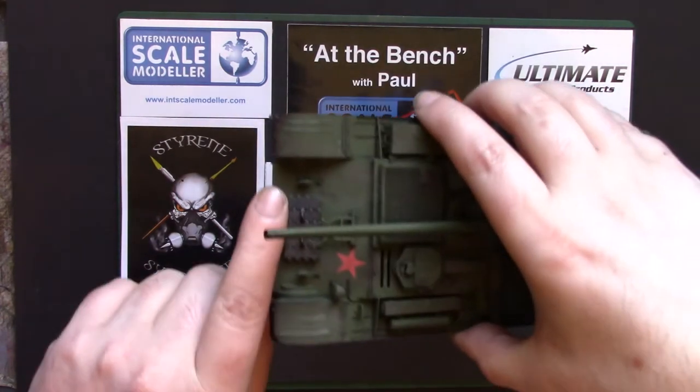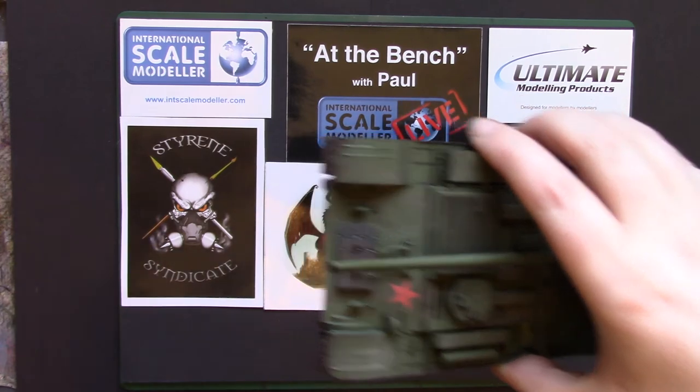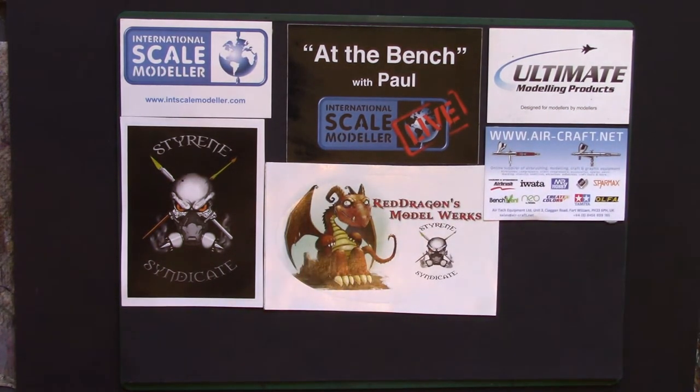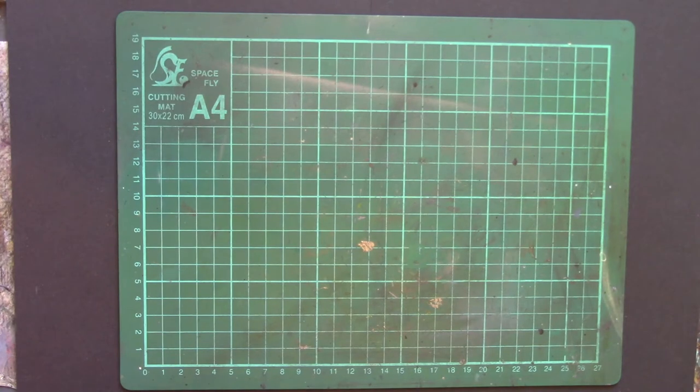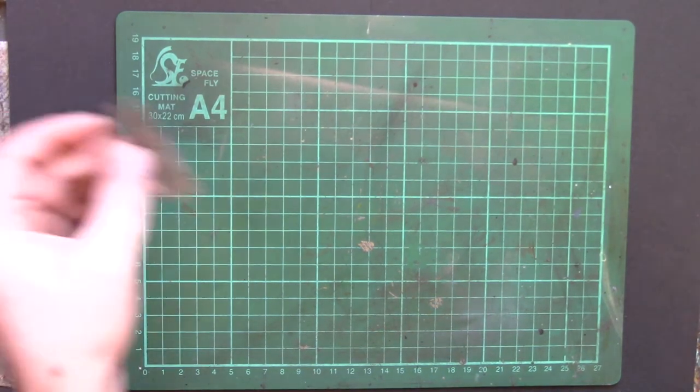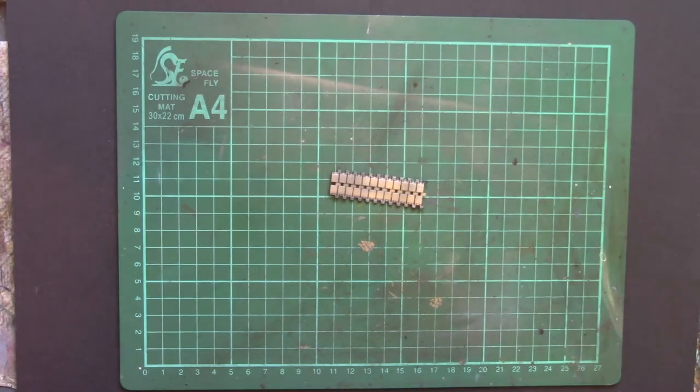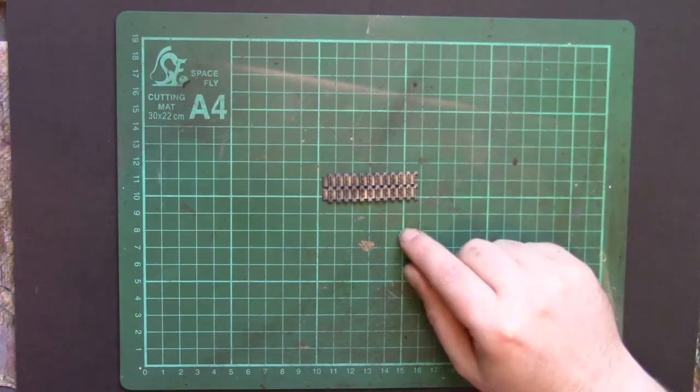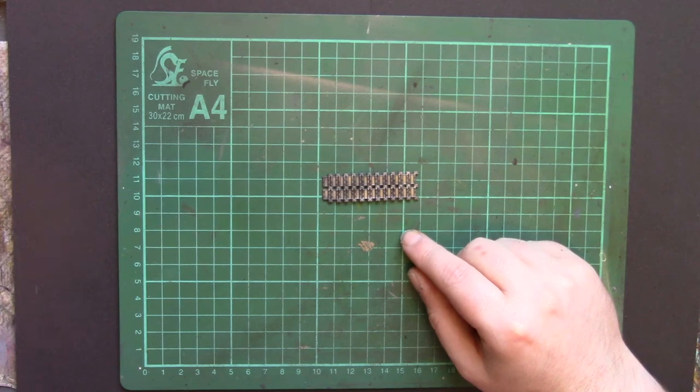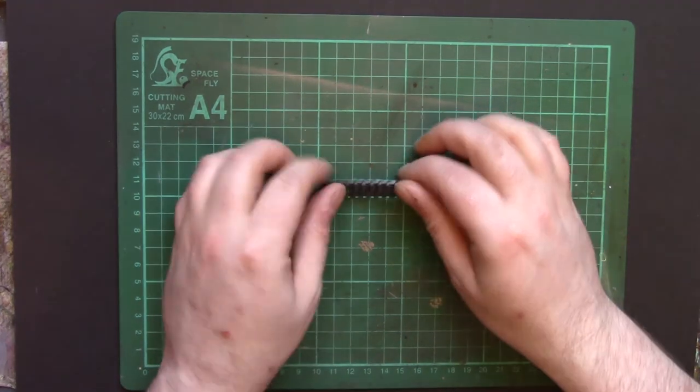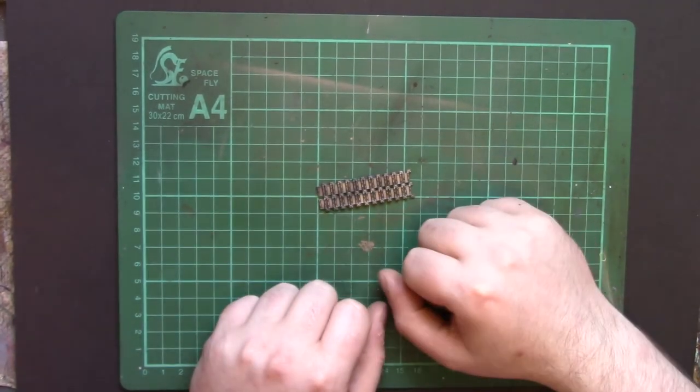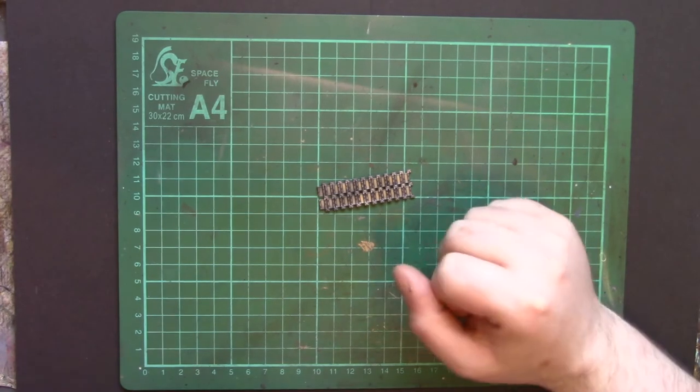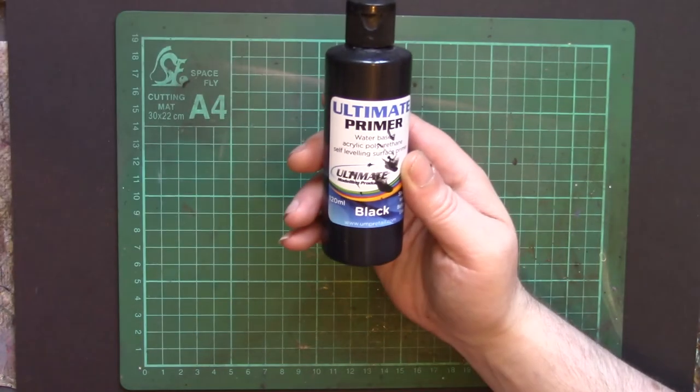There's a slightly different way of doing it for brand new track links that haven't been used. So where do we start? Well first thing, here's some I prepared earlier: just a small run of the Indie Link tracks from the T-90 that was spare, glued together. I didn't bother with the guide horns just for this. And then primed with the Ultimate Black Primer. Superb stuff.